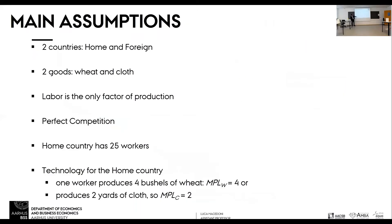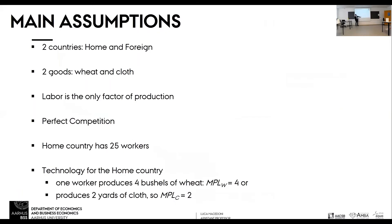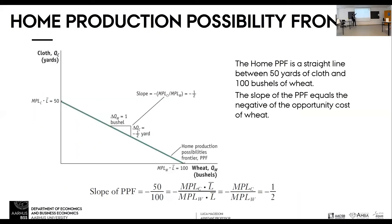The marginal product of labor in wheat is four, so one worker can produce four units of wheat. If everybody works in the wheat sector, we have four times 25 workers, which is 100 — the maximum amount of wheat we can produce. Same for cloth: the marginal product of labor in cloth is two, so two times 25 workers is 50. That's the point where everybody works in the cloth sector.